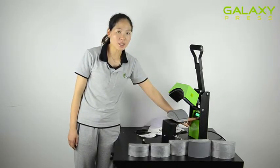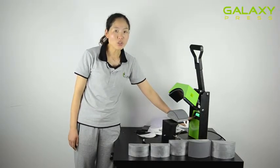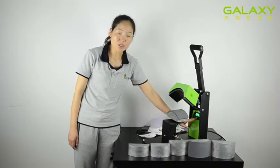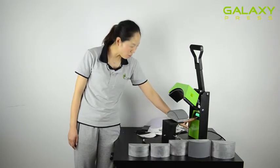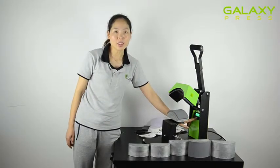Then we have to wait for the temperature rising. Now the time is lightening. Press the arrow at the left to reduce the time, and press the arrow at the right to increase the time. The time we need is 30 seconds.